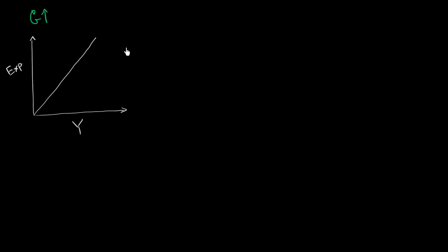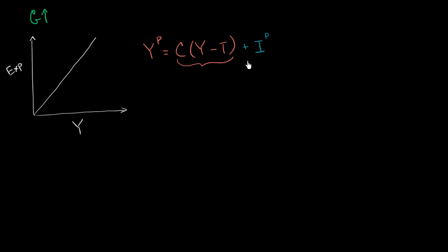Then we think about planned expenditures. Planned expenditures equal aggregate consumer spending, which is a function of income minus taxes, or disposable income — c is a function of y minus t. This is our consumption function. We assume it's linear in this video, but it doesn't have to be. Then we have our planned investment, assuming real interest rates are fixed right now, plus government spending, and we could even throw in net exports for an open economy. This curve might look something like this, and we get to our equilibrium level of GDP.